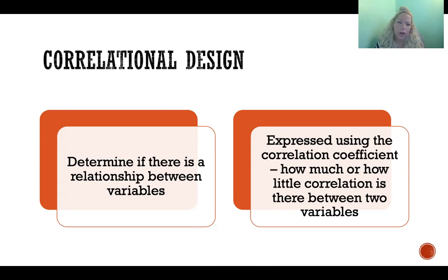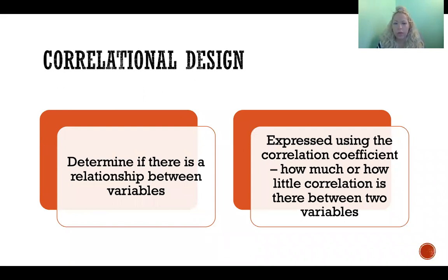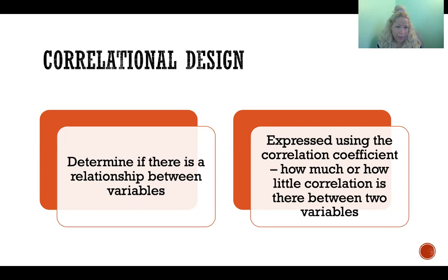If we're trying to find out if variables are correlated, that means we're trying to determine if there's a relationship between two or more variables. Now, that does not mean that one variable caused another — it simply means that they're related. Maybe two things tend to happen at the same time, or two things tend not to happen at the same time. Those would be correlations.